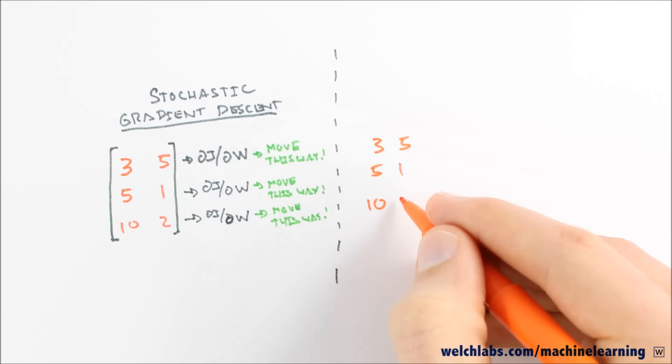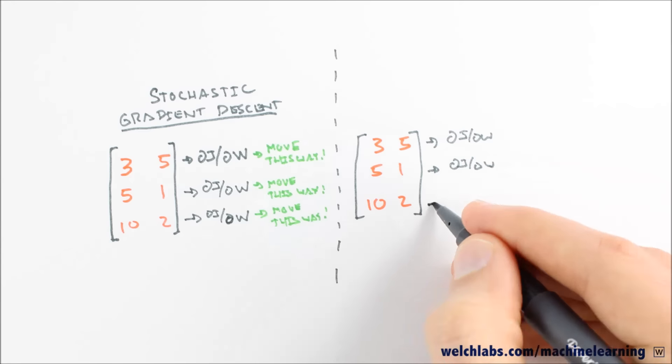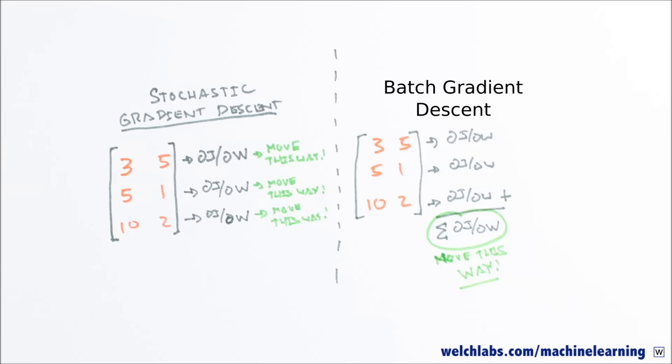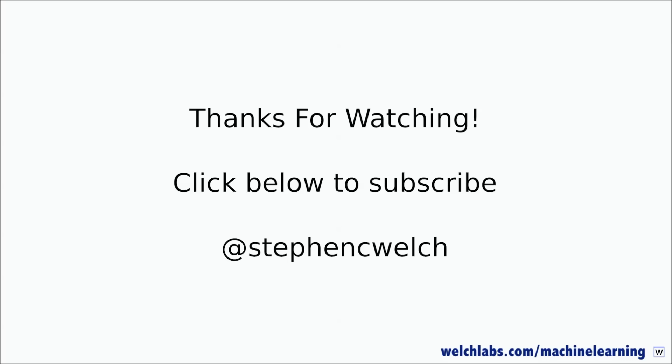The details of gradient descent are a deep topic for another day. Okay, for now we're going to do our gradient descent batch style, where we use all our examples at once, and the way we've set up our cost function will keep things nice and convex. Next time we'll compute and code up our gradients.